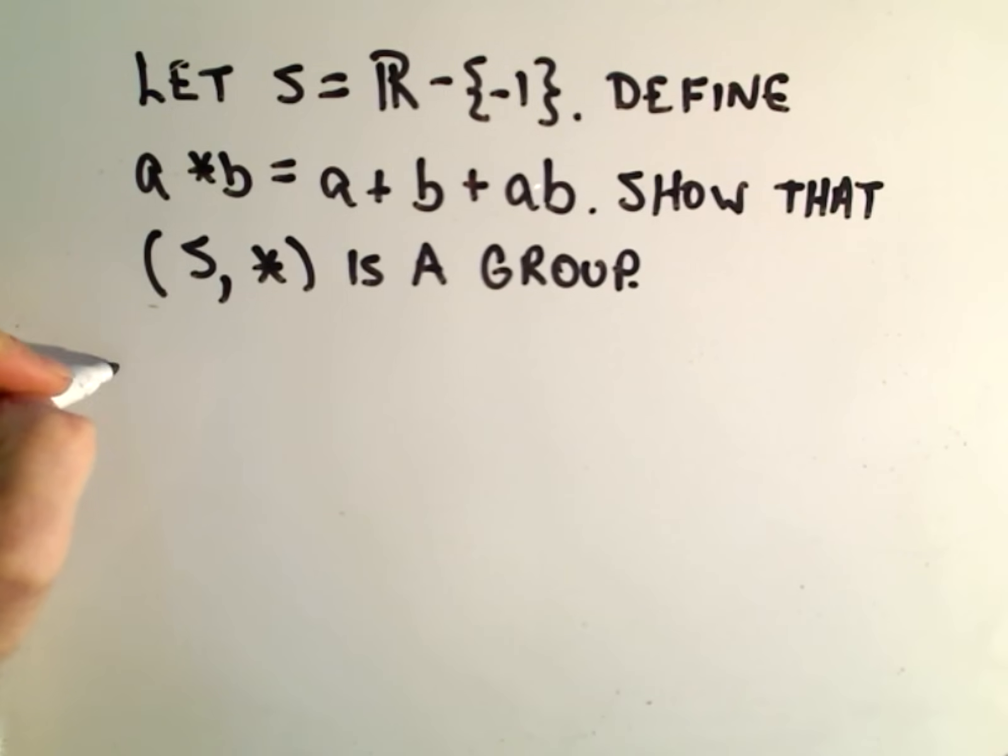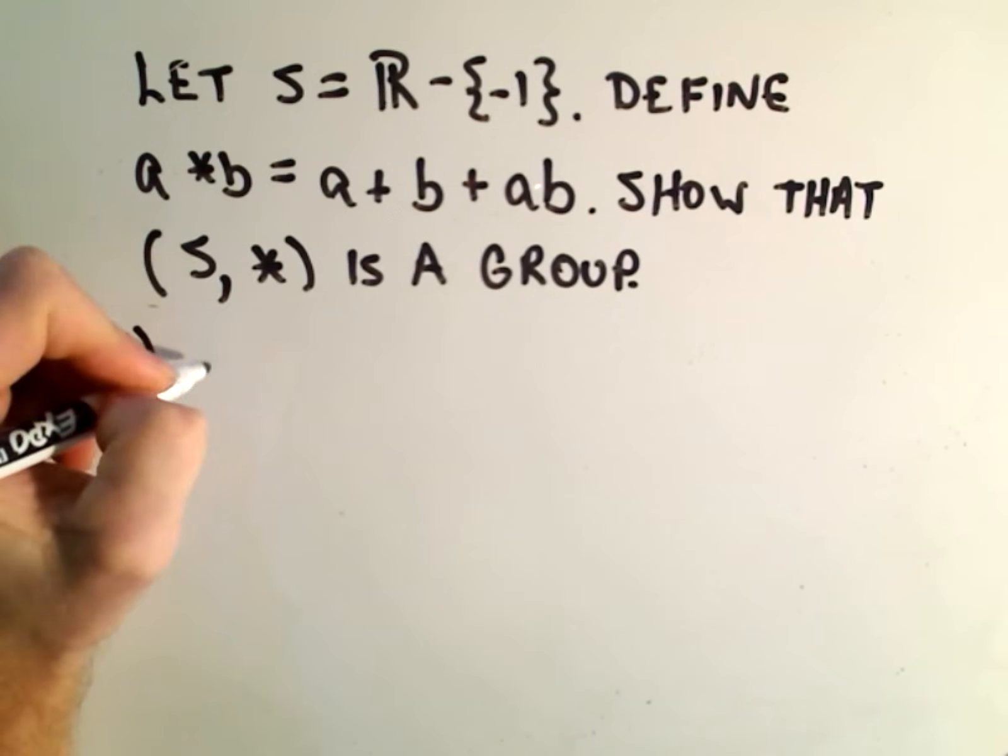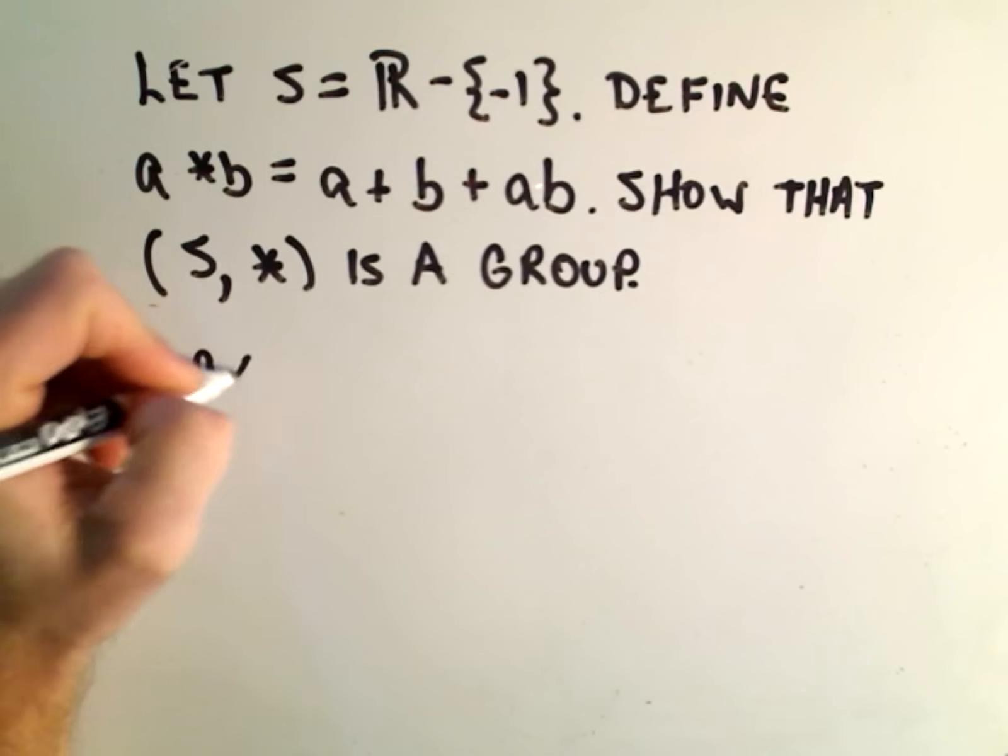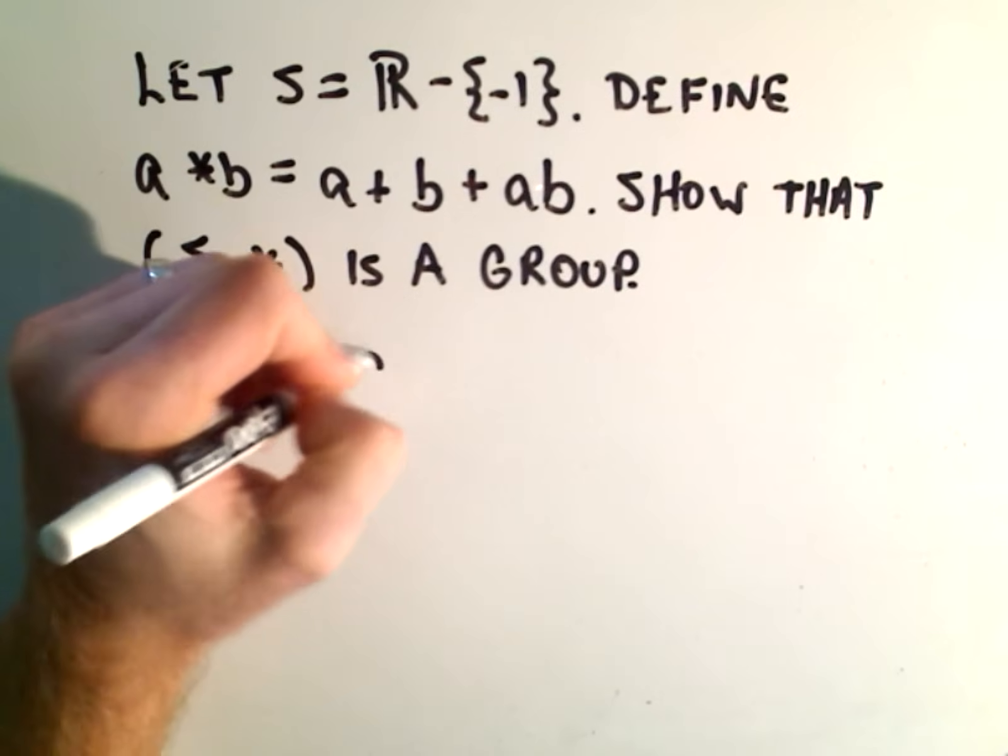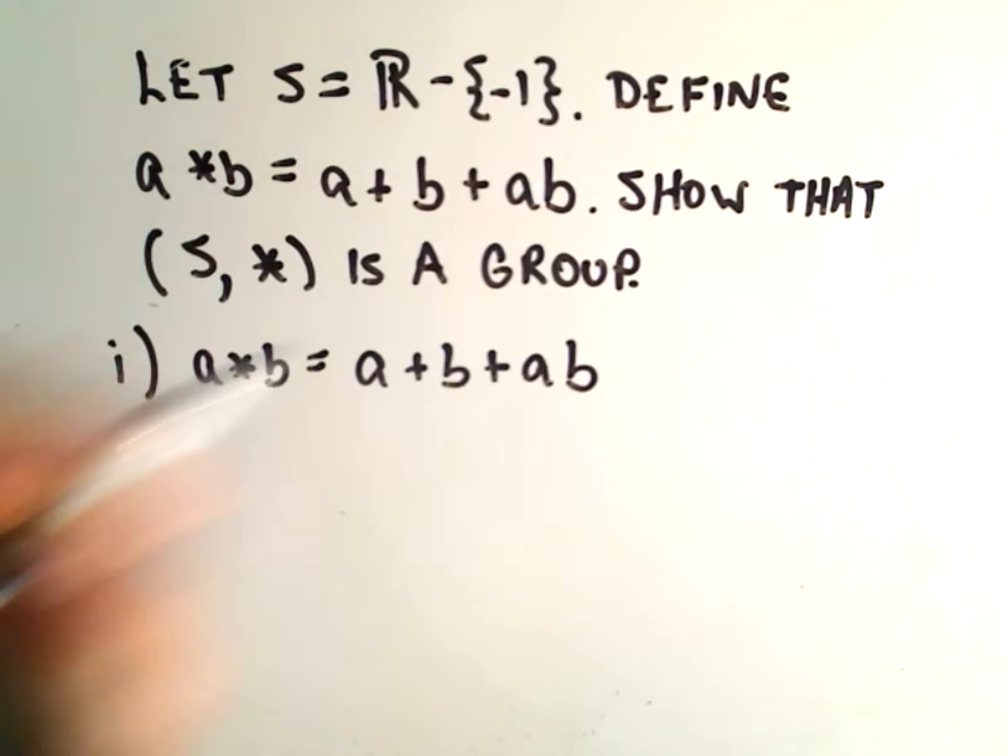The first thing we have to show is closure. If you apply A star B, we get A plus B plus AB.